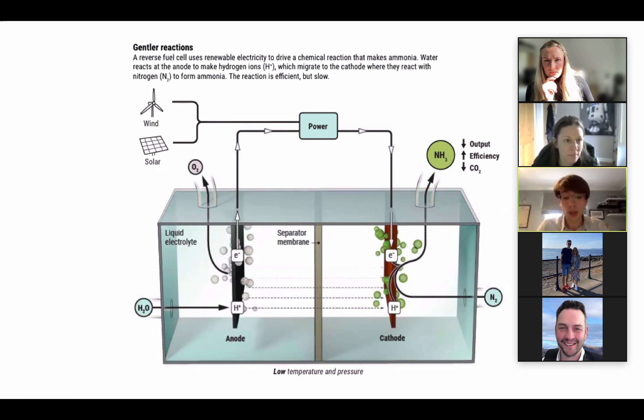As shown in the diagram, water reacts at the anode on the left to make hydrogen ions. These then migrate towards the cathode where they then react with nitrogen and together they form ammonia. Zero carbon is emitted throughout the entire process. It's quite frankly, genius.